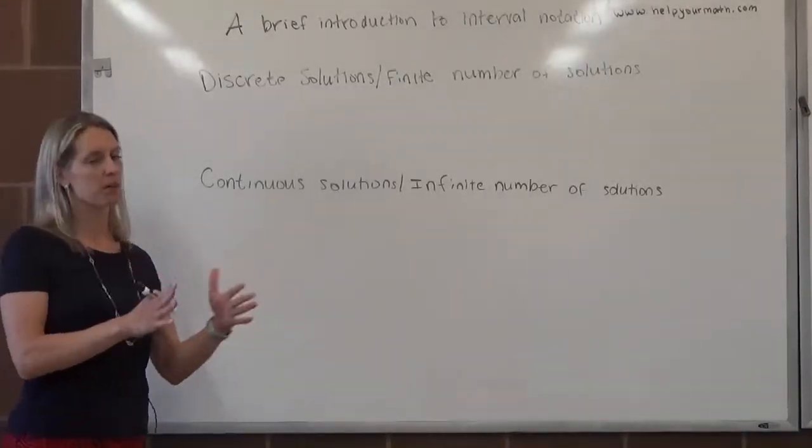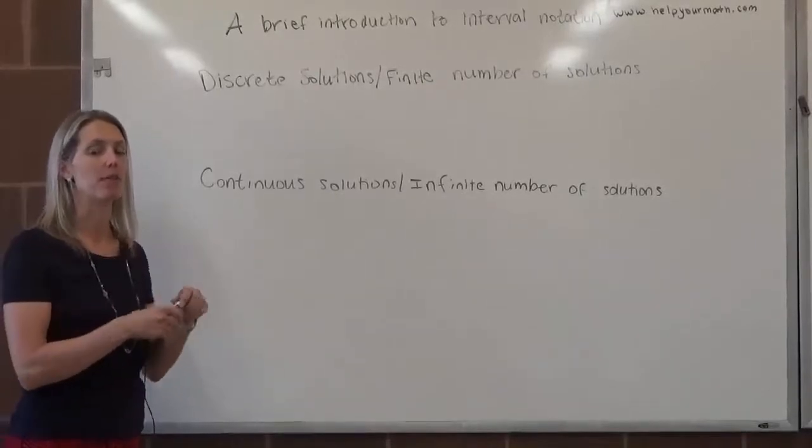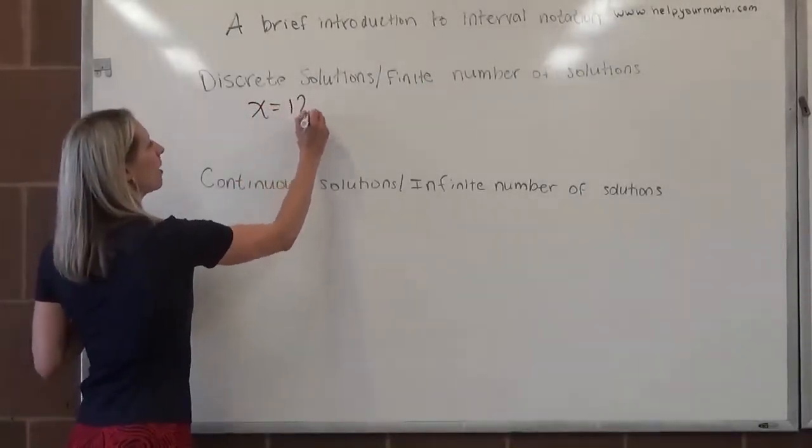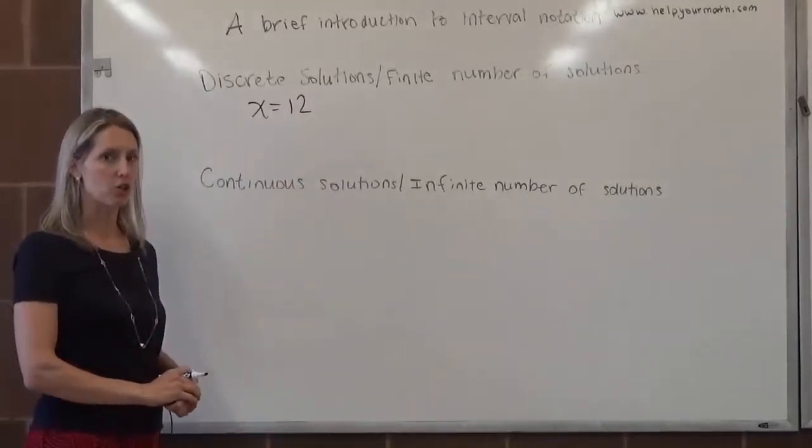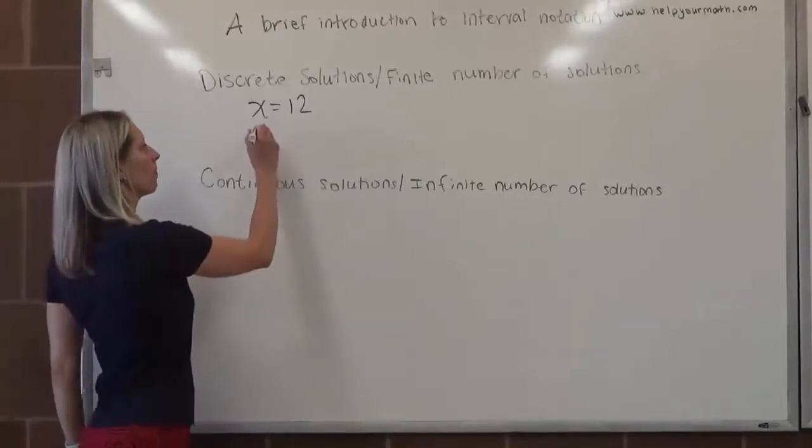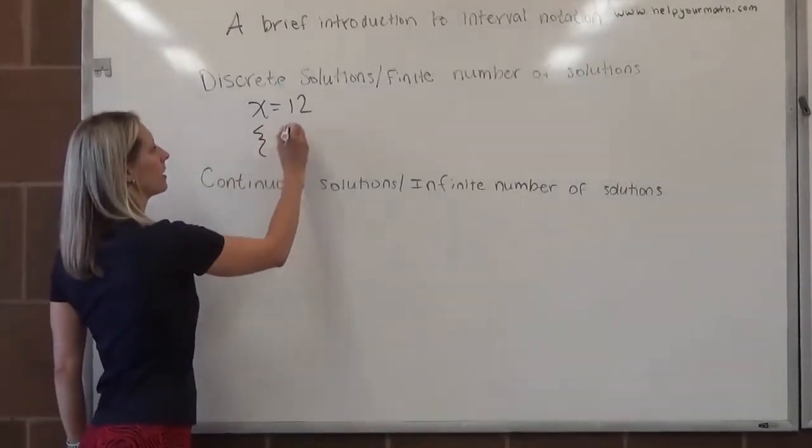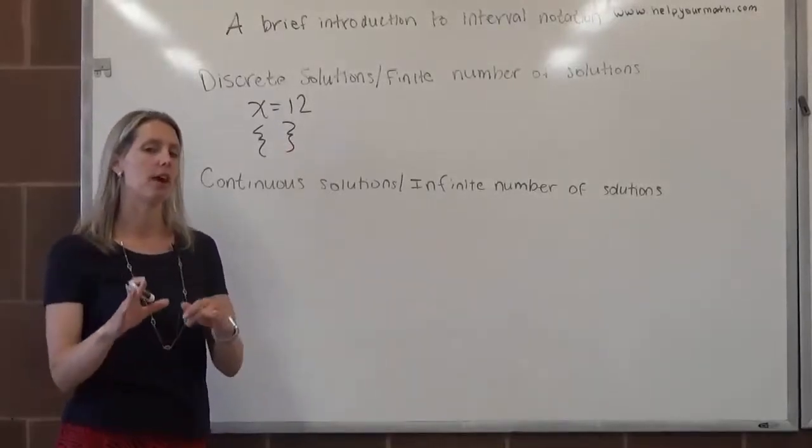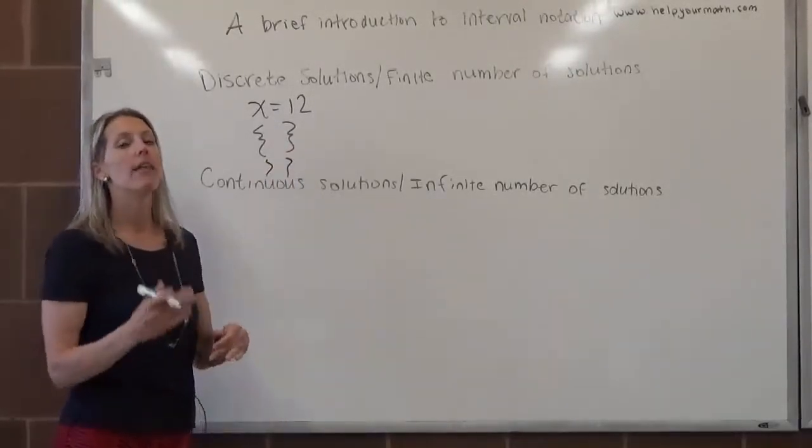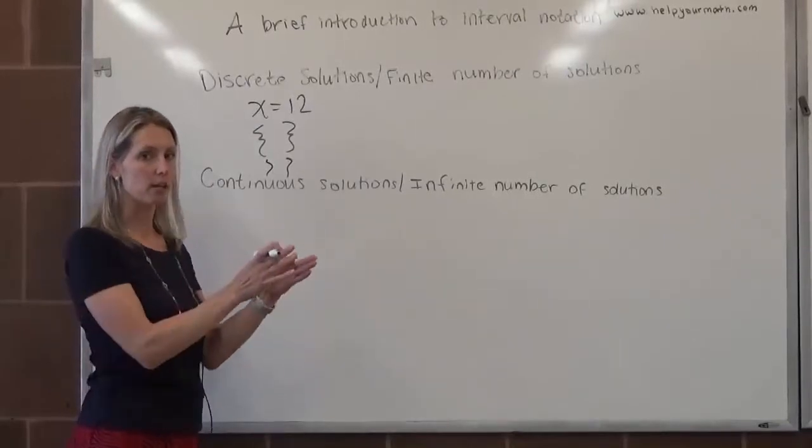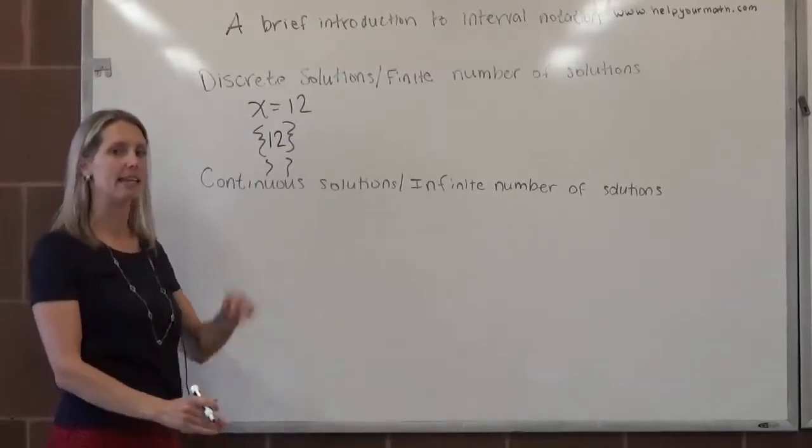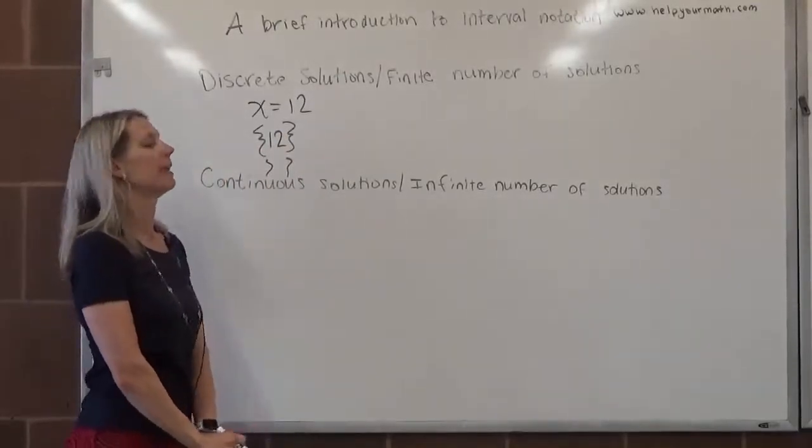We see this generally when solving linear equations and we end up with, let's say, x equals 12. To write this solution in interval notation, since this is a discrete single number, we open up what are called braces. Braces generally look like this, although if you're not very good with those, you can do squiggles. Then you take those solutions and put them inside the braces. So I have my braces open, I'm going to put 12 inside, and that indicates the solution set contains the element 12.